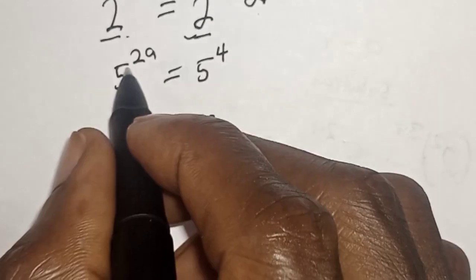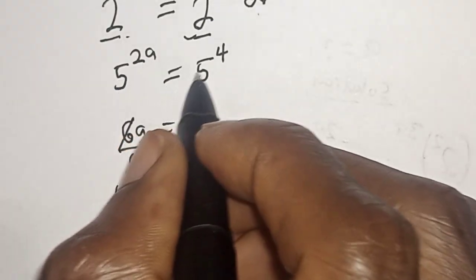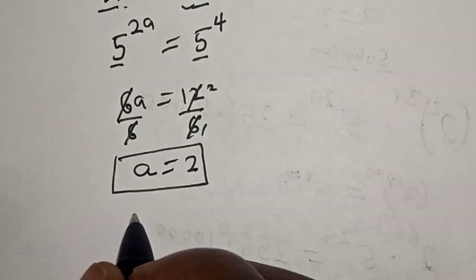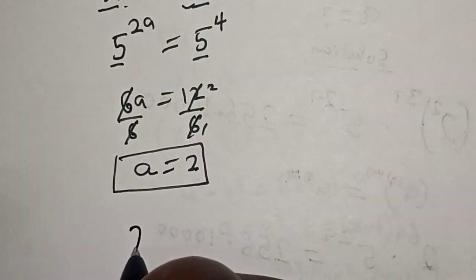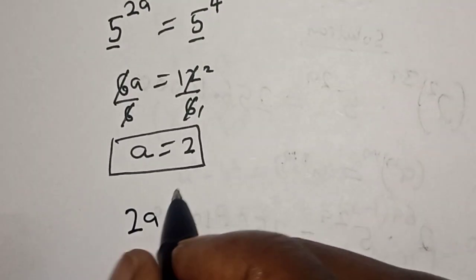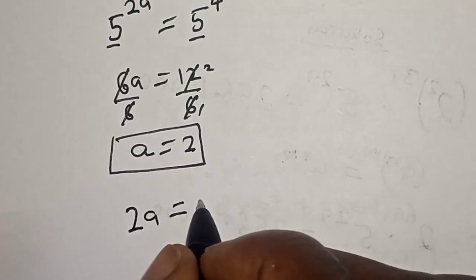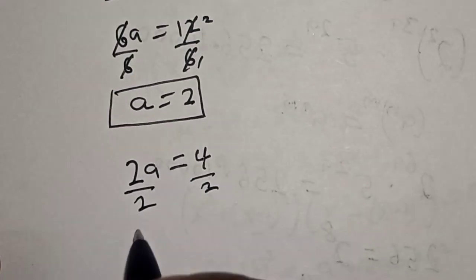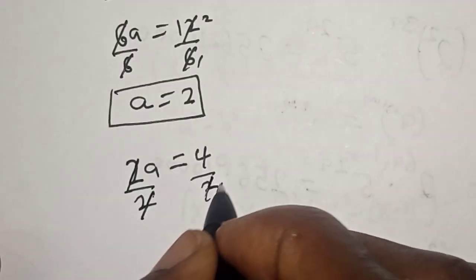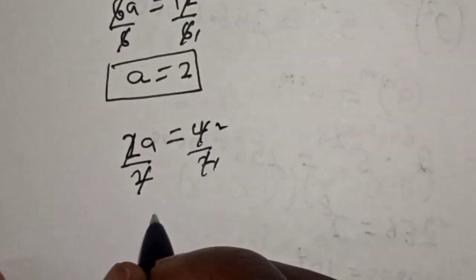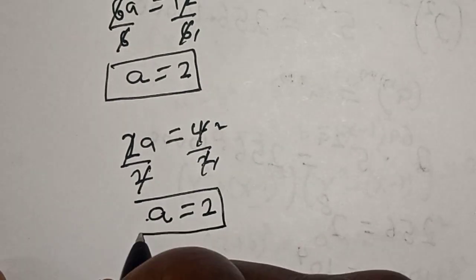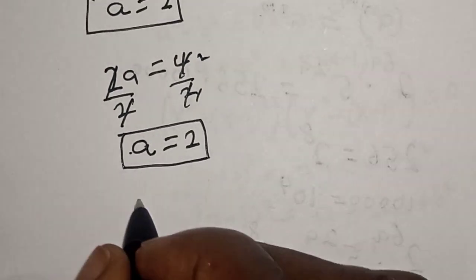For the base-5 equation: 5 raised to power 2a is equal to 5 to the power of 4. They have the same base 5, so 2a is equal to 4. Dividing both sides by 2, a is equal to 2. Therefore our final answer is a is equal to 2.